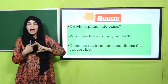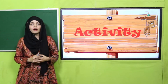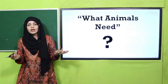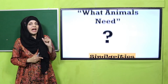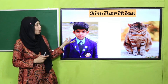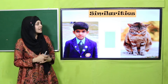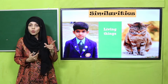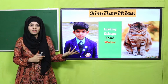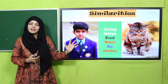Life gases and food — very nice. Now let's start with an activity. You have to tell me what animals need — janvaron ko kya kya chahiye hota hai. Also tell me the similarities between this boy and an animal. There are some similarities: both are living things, both need food.